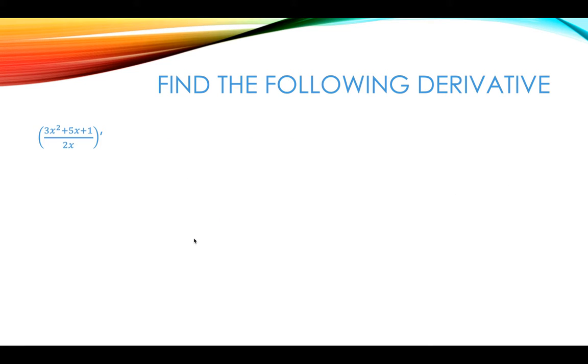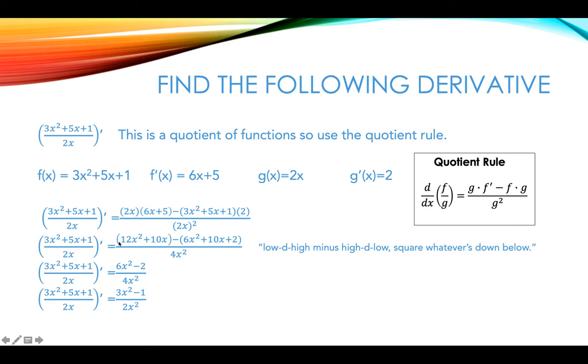This last one is a quotient, so f of x is 3x squared plus 5x plus 1 and g of x is 2x. The derivative of f of x is 6x plus 5, the derivative of 2x is 2.